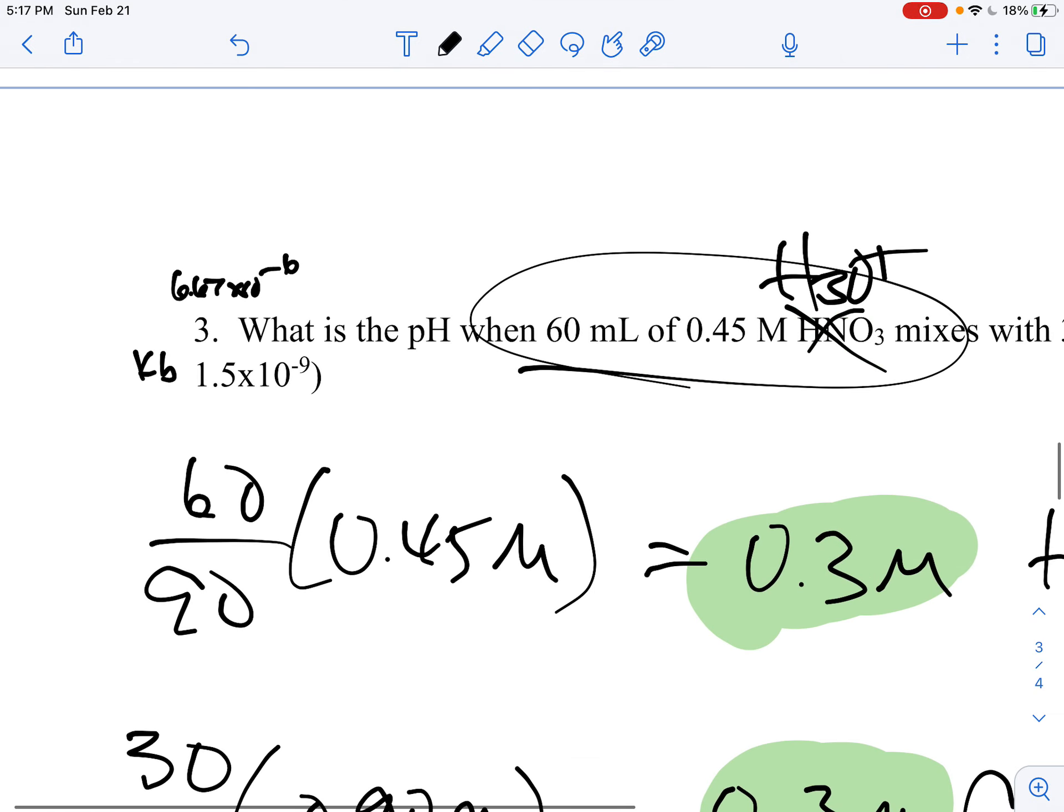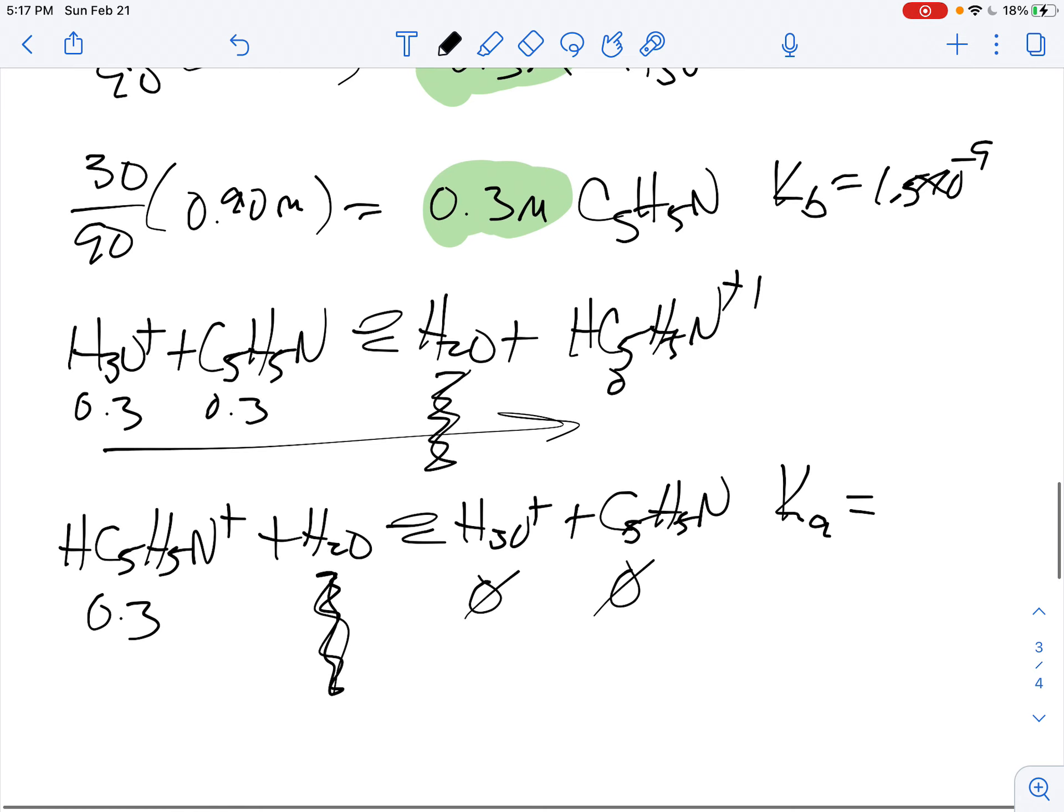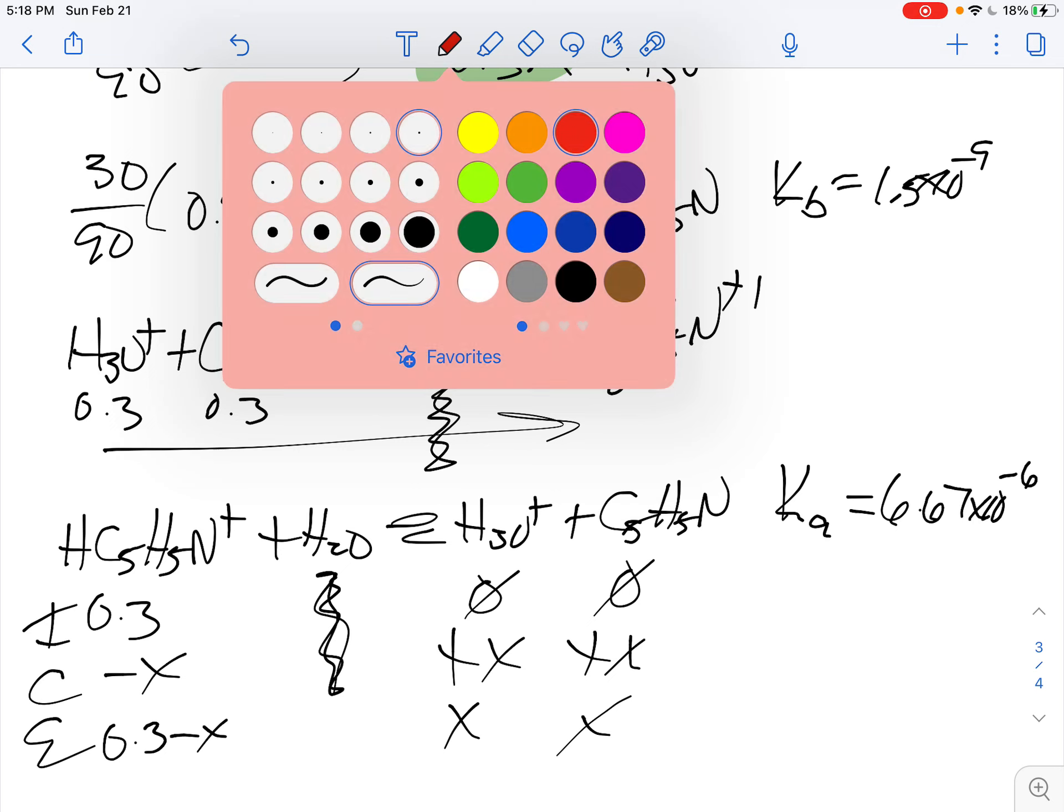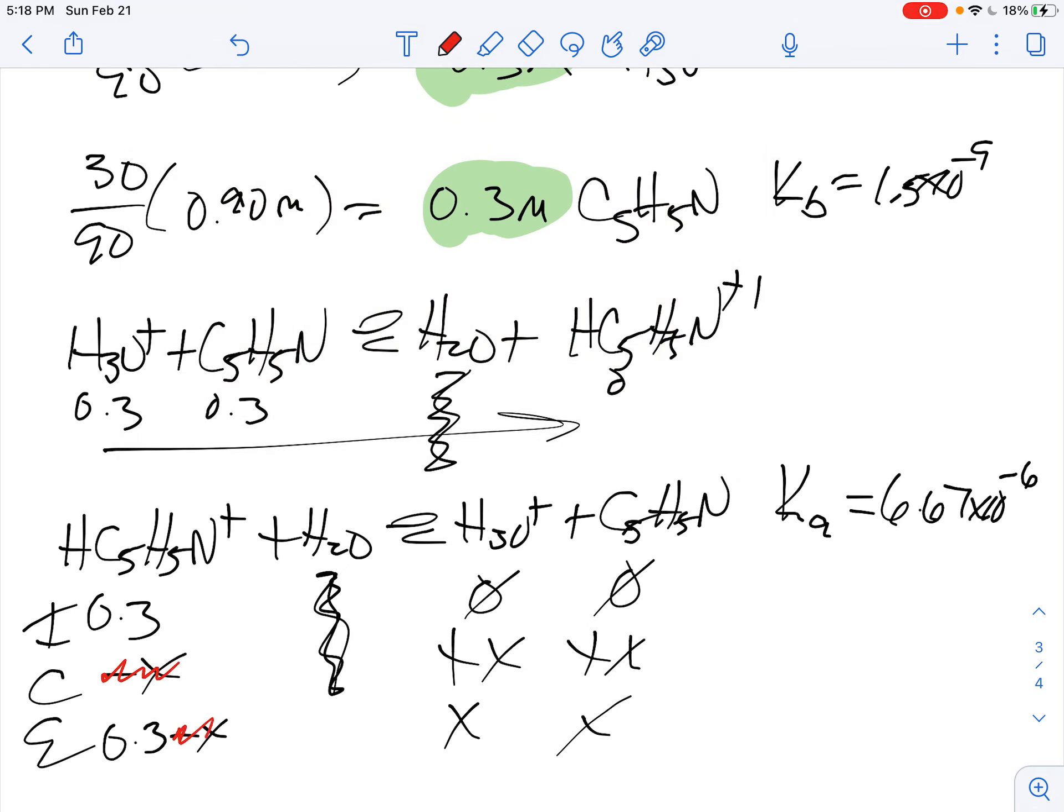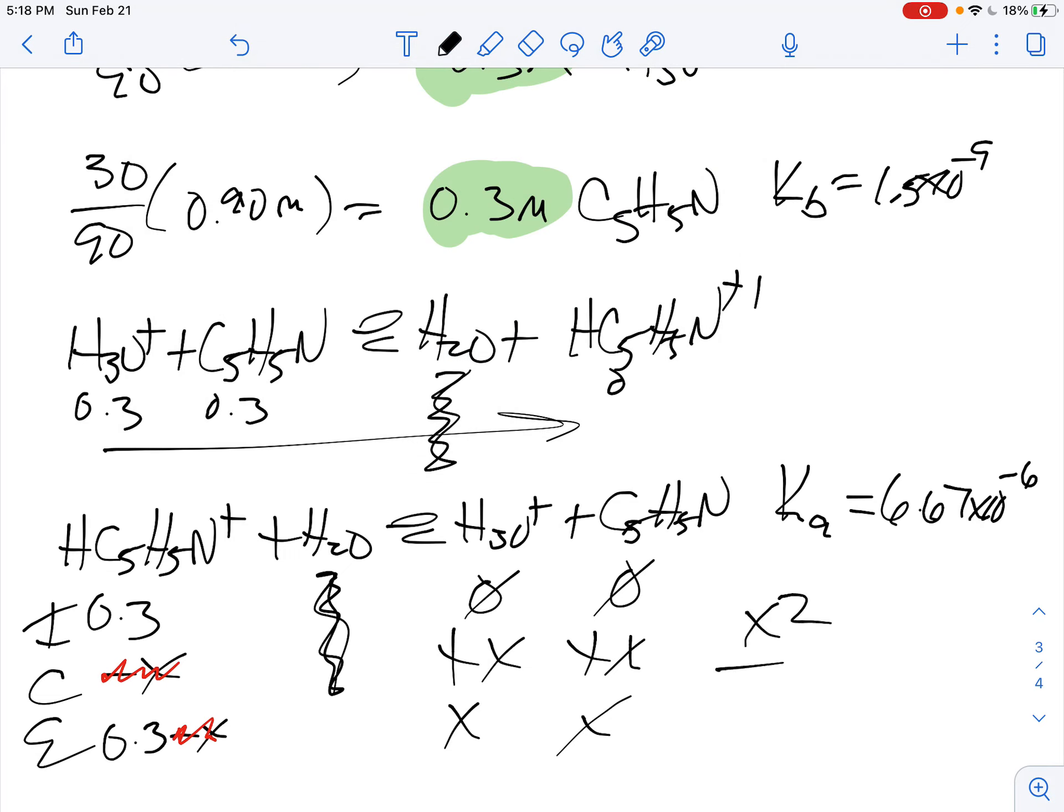So 6.67×10^-6, that's going to be equal to Ka. So this is an I-C-E. This is going to be minus x, plus x, plus x to be 0.3 minus x, x and x. If you like the quadratic, help yourself. I don't, so I'm going to get rid of it because we have an extremely small number. So for the 57,000th time, this is going to be x^2 over 0.3 is equal to 6.67×10^-6.